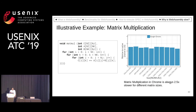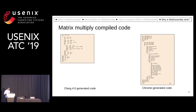To answer these questions, let's look at a very small benchmark of matrix multiplication. As you can see, it always performs around 2.5x lower for different matrix sizes. On one hand, we have Clang-generated code.